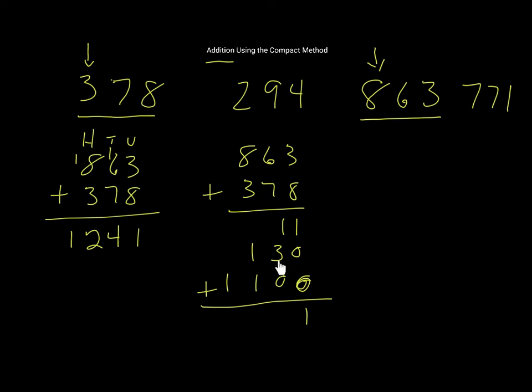Then 10 and 30 and 0 is going to be 40. Then 100 plus 100 is going to be 200 here, and then we have 1000. And you can see the answer is the same.